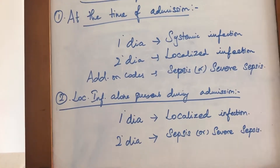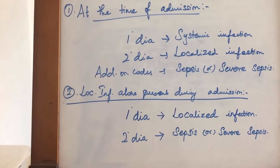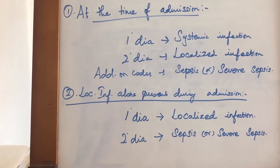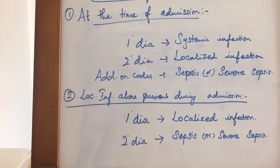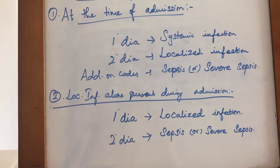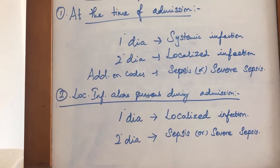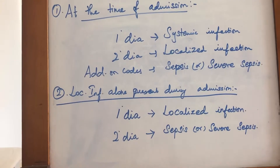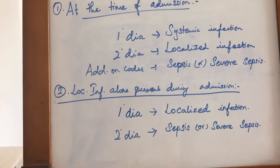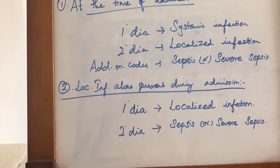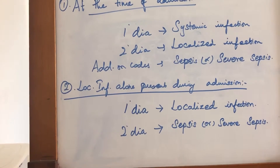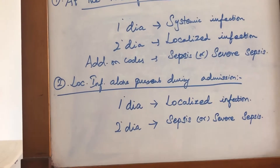Localized infections include Cellulitis and other infections affecting one particular organ. The secondary diagnosis is the localized infection, coded after the principal diagnosis. Add-on codes are for Sepsis or Severe Sepsis. For example, if a patient is admitted with Pneumonia and Severe Sepsis has not yet developed, then the localized infection is the principal diagnosis, followed by codes for Sepsis or Severe Sepsis.